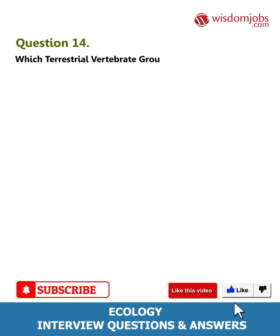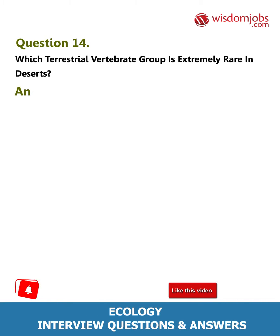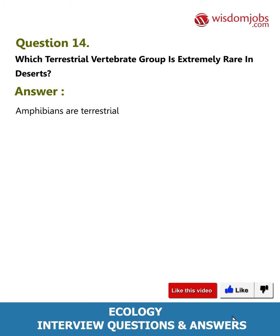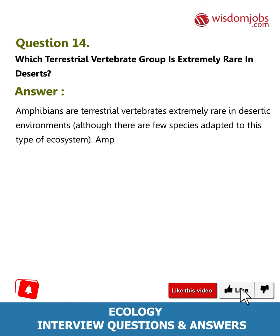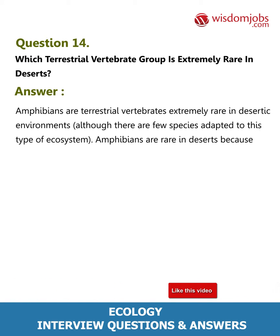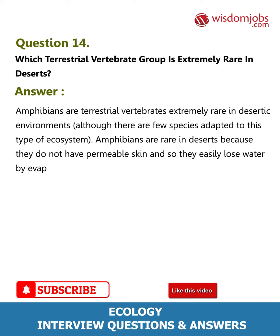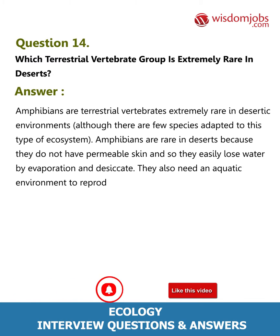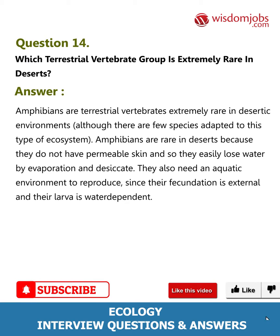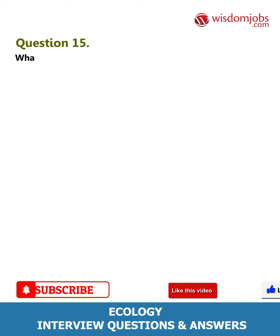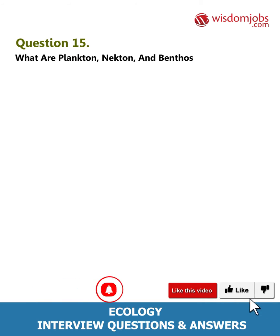Question 14: Which terrestrial vertebrate group is extremely rare in deserts? Amphibians are terrestrial vertebrates extremely rare in desertic environments. Although there are few species adapted to this type of ecosystem, amphibians are rare in deserts because they do not have waterproof skin and so they easily lose water by evaporation and desiccate. They also need an aquatic environment to reproduce, since their fecundation is external and their larvae are water-dependent.